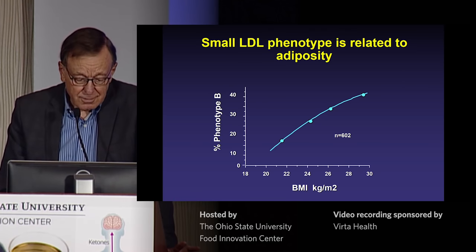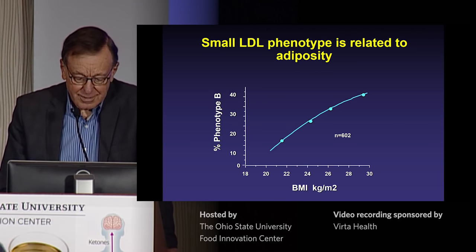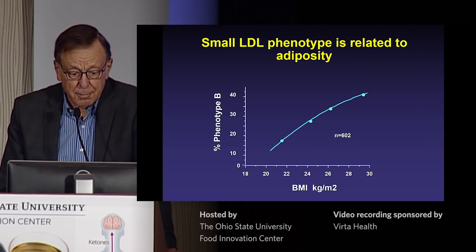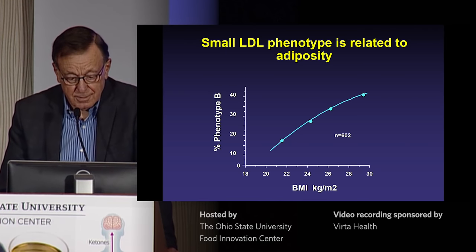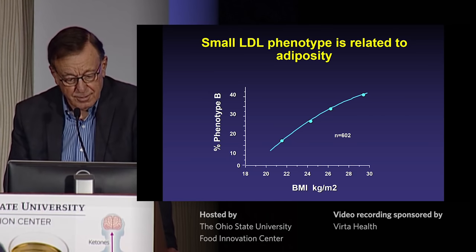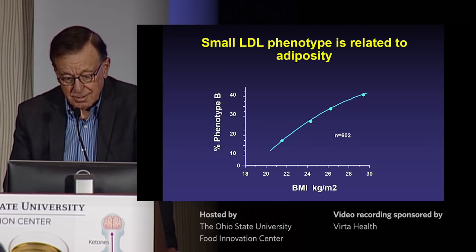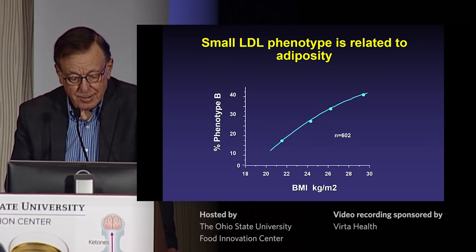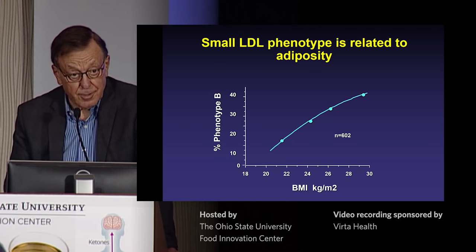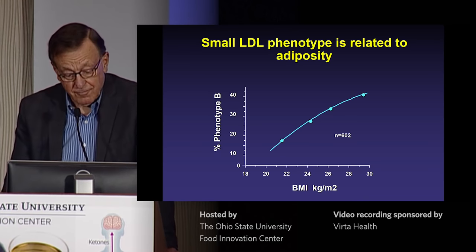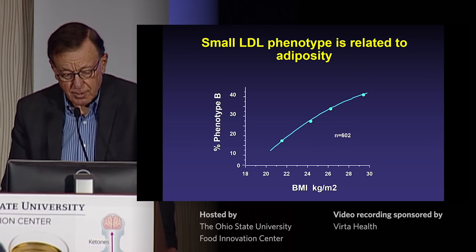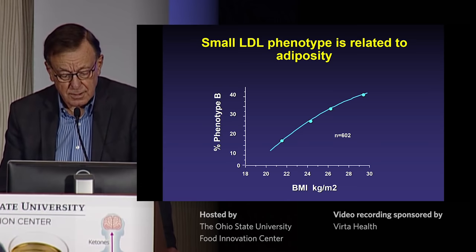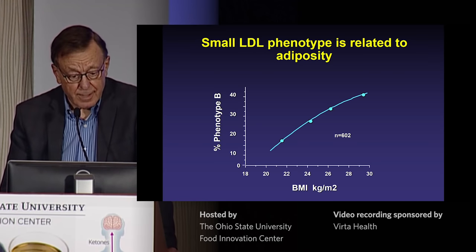Adiposity is also a determinant of the small LDL phenotype. In 600 people we studied, there is the expected relationship: as BMI increases, the small LDL phenotype becomes more prevalent. With waist circumference it would be even stronger — this is related to visceral adiposity, as everyone knows.